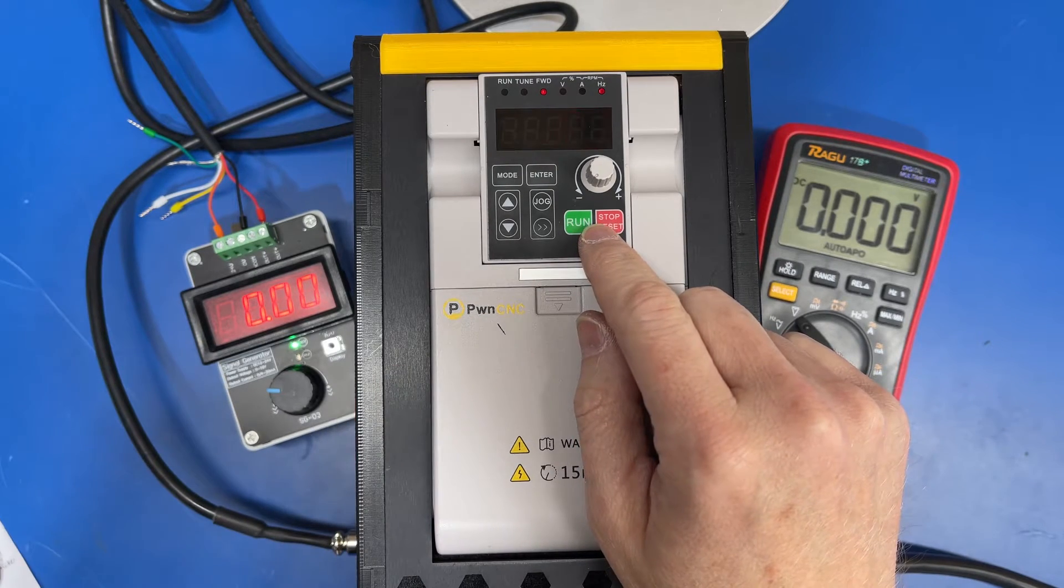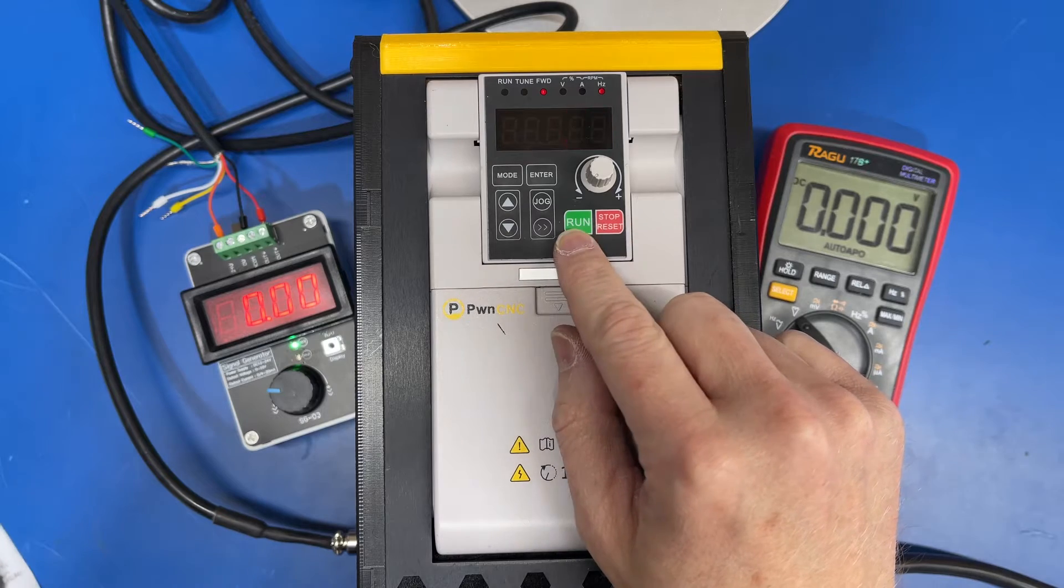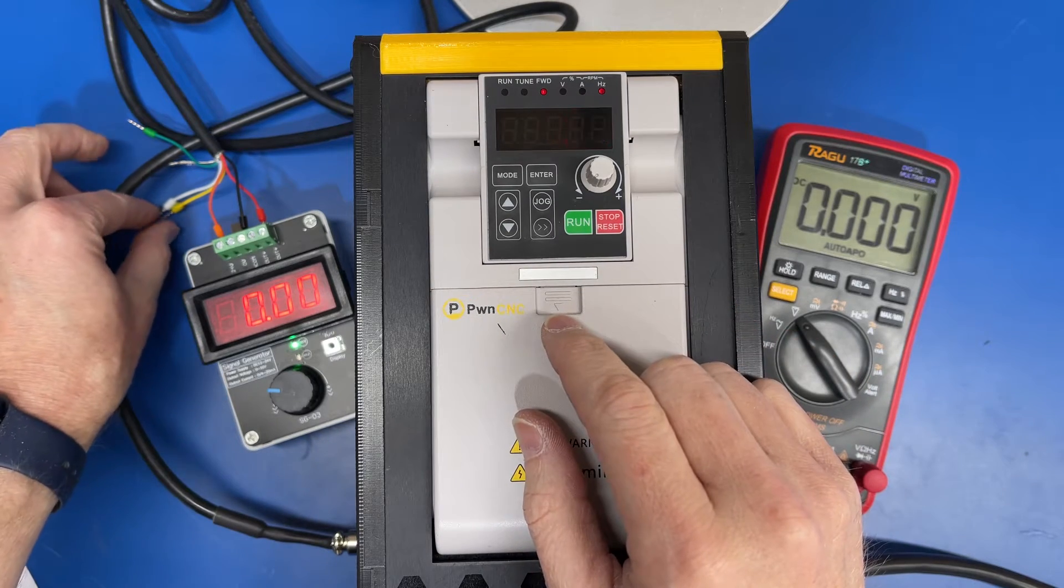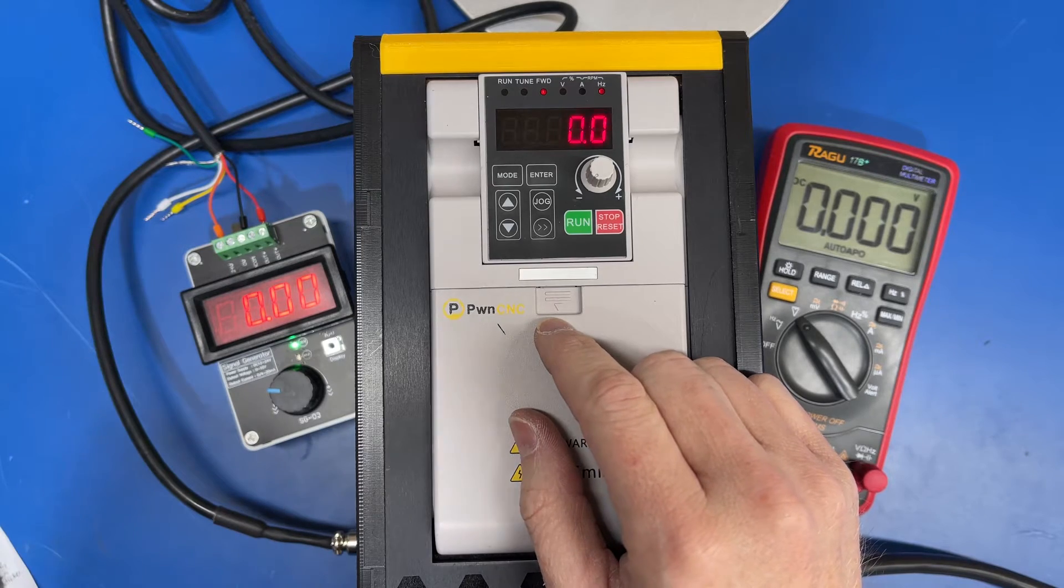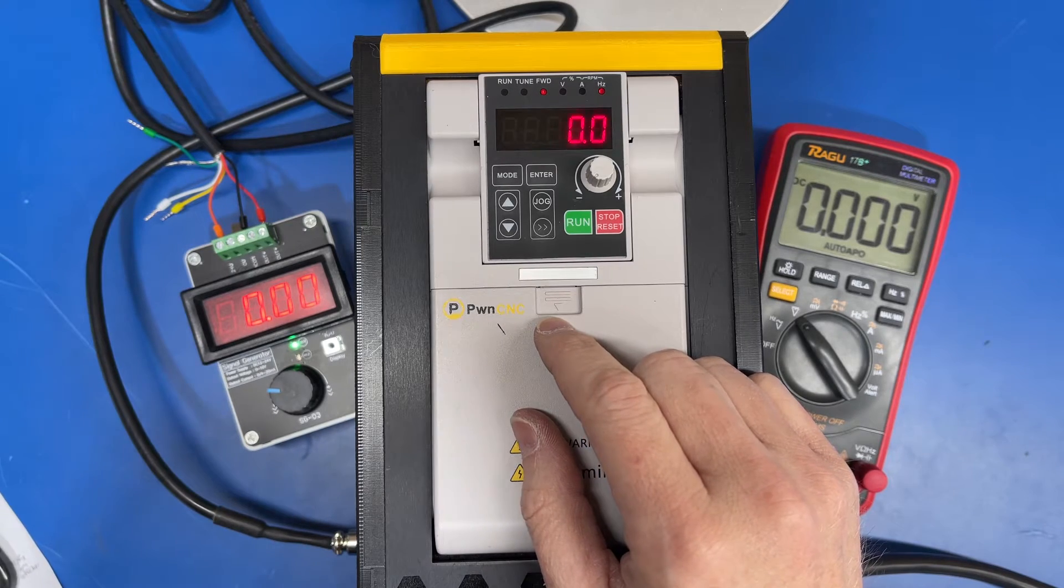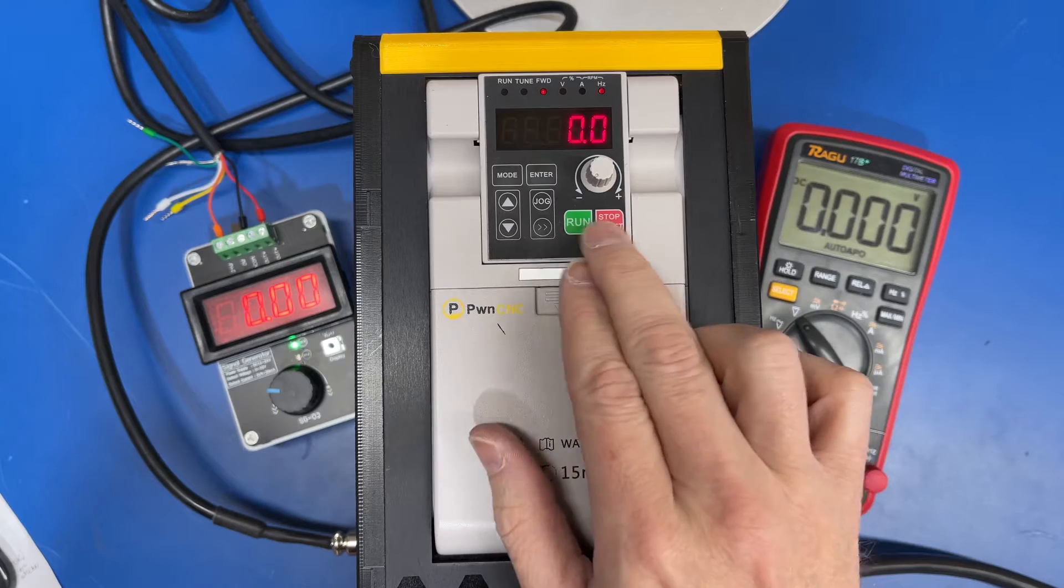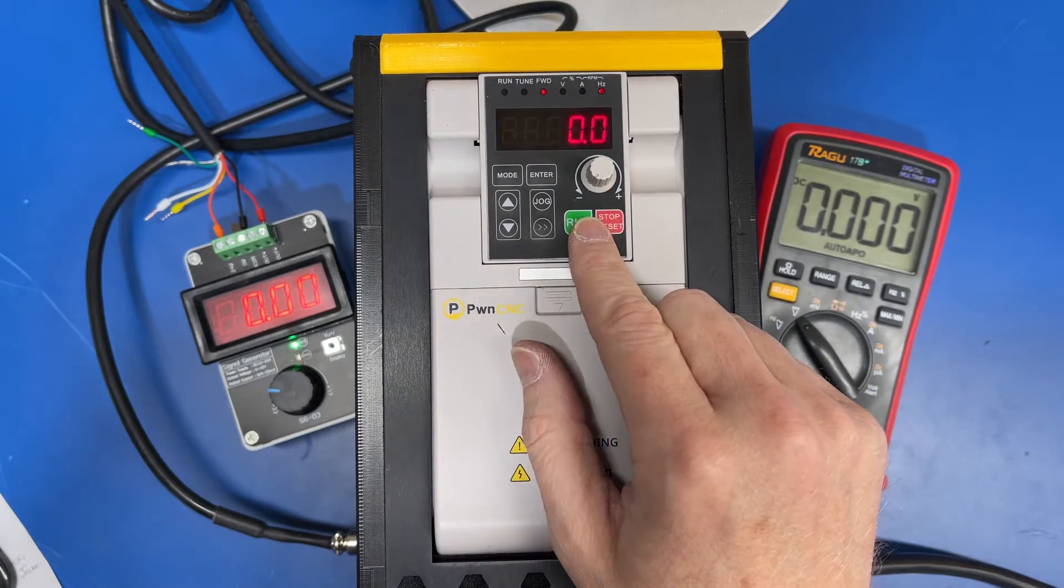I'm sorry, it's set to 0. Normally we set that to 1 so that connecting these two wires through a relay will trigger the forward function. We have it set to 0 so that it enables the run and stop buttons on the VFD keypad itself.